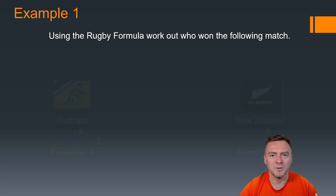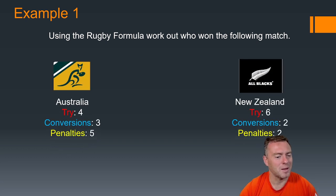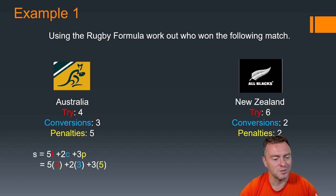Using the rugby formula, work out who won the following match. We've got Australia versus New Zealand, All Blacks versus Wallabies, always a classic. Here we go. So the first step is I'd write the rule, then I'd substitute it in. 5 times 4 plus 2 times 3 plus 3 times 5, which gives us 20 + 6 + 15, which gives us 41.